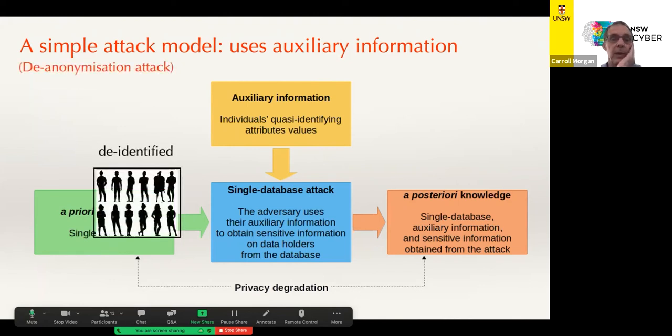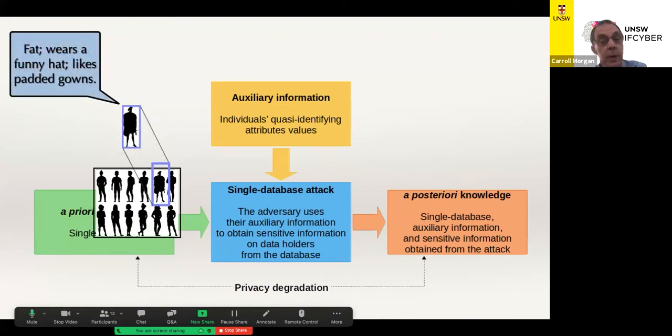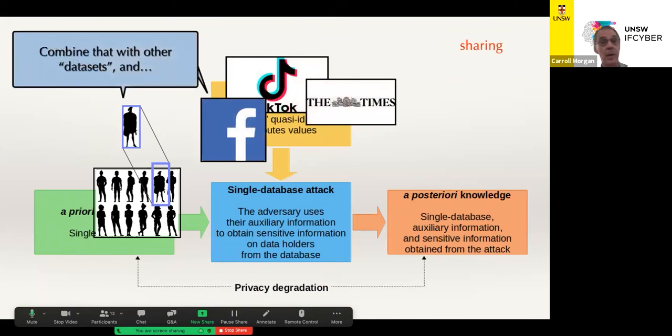So I'm going to show you an example of that because this is a typical way to go. We've got a database here of people in there and they've been de-identified on the left. I've indicated that by making them silhouettes. So all you can see is their shape. I don't know who they are. But it turns out that you can see some of the characteristics of course because this database happens to record things like whether the person is fat or not and whether he wears a funny hat and whether he likes padded gowns. Now that's all you know at this point. But then there are of course other databases lying around. Social databases. That's actually what they are. Things like Facebook, TikTok, newspapers and so on. They are databases too because they contain information about individuals.